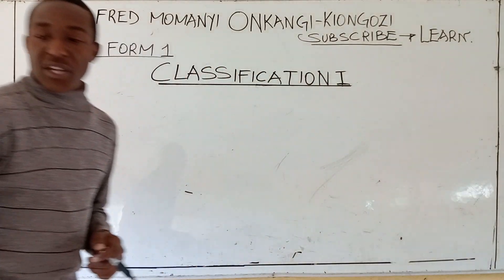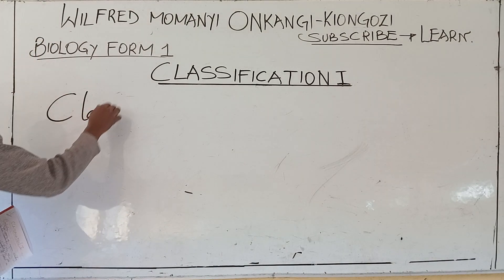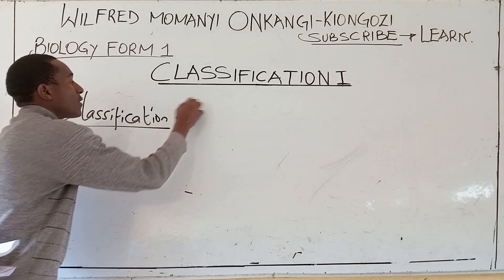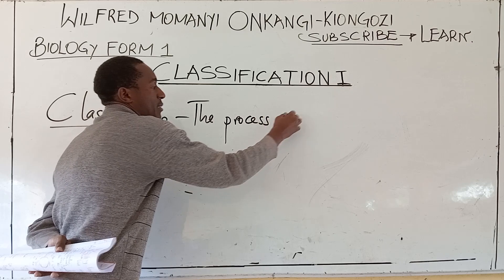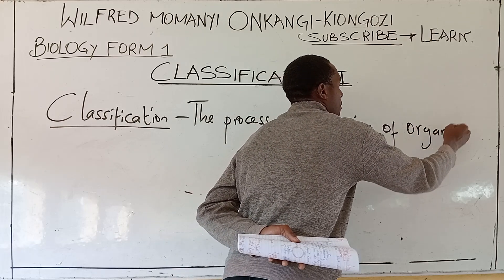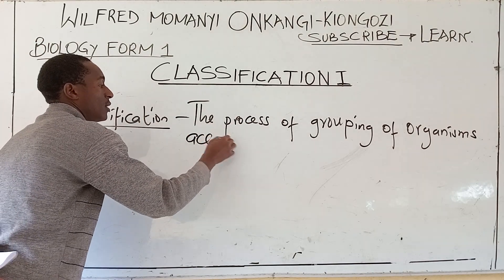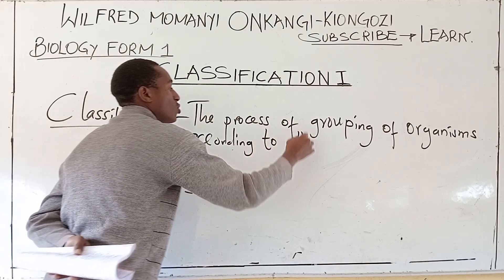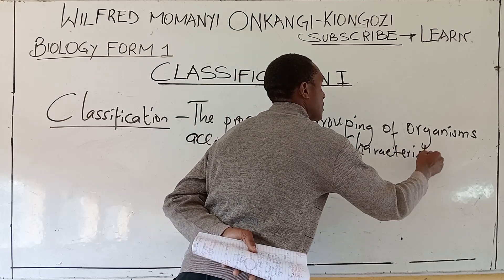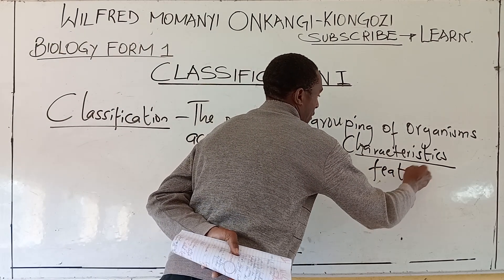So we define classification. Classification is the process of grouping of organisms according to their characteristics — you can also use the term features.